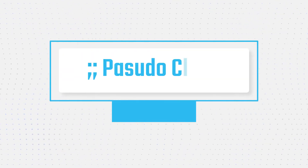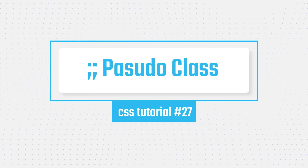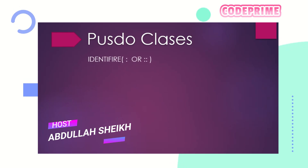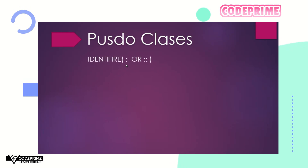Hi everyone, welcome back to another bit of Code Prime. In this video we are going to learn CSS pseudo-classes. We'll explain the identifier — identified by single colon or double colon — then layers, before and after uses, and numbering to select elements using nth-child and linear gradient backgrounds.